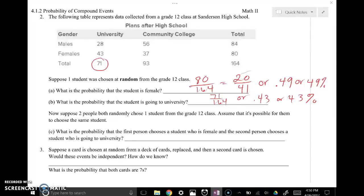All right, now suppose two are chosen at random. So these are multiple events happening at the same time that we want to make sure that we're paying attention to. Okay, so now choose two people both randomly. Chose one student from the 12th grade. Assume that it's possible for them to choose the same student after they randomly choose the second person. All right, so what's the probability that the first person chooses a student that is female and the second person chooses a student who is going to the university.